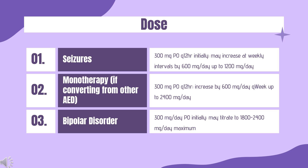Monotherapy if AED-naive: Initial 300 mg PO Q12HR, increase by 300 mg per day every 3 days to 1,200 mg per day divided Q12HR. Bipolar disorder (off-label): 300 mg per day PO initially, may titrate to 1,800 to 2,400 mg per day maximum. Diabetic neuropathy (off-label): 150 to 300 mg per day PO initially, may increase to 900 to 1,200 mg per day as a general recommendation; doses up to 1,800 mg per day have been studied with positive results. Neuropathy (off-label): 300 mg PO Q8–12HR initially, may adjust dose to 400 to 2,000 mg divided Q8–12HR at maximum tolerated or effective dose.